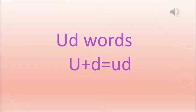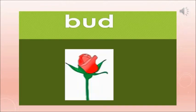Now we have seen a few words with 'ud'. We will see the meaning of these words and how they can be used in a sentence. The sound of 'u' is 'u' and the sound of 'd' is 'd', and together it becomes 'ud'. So the first word that we are going to do is 'bud'.